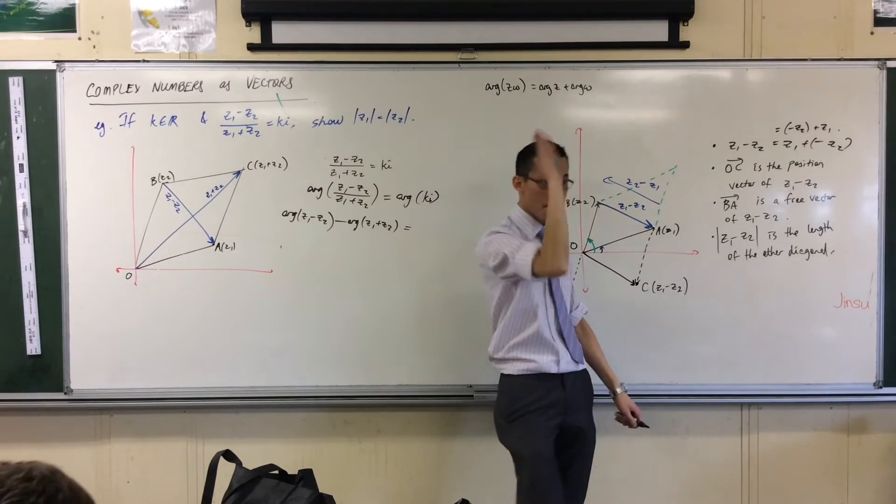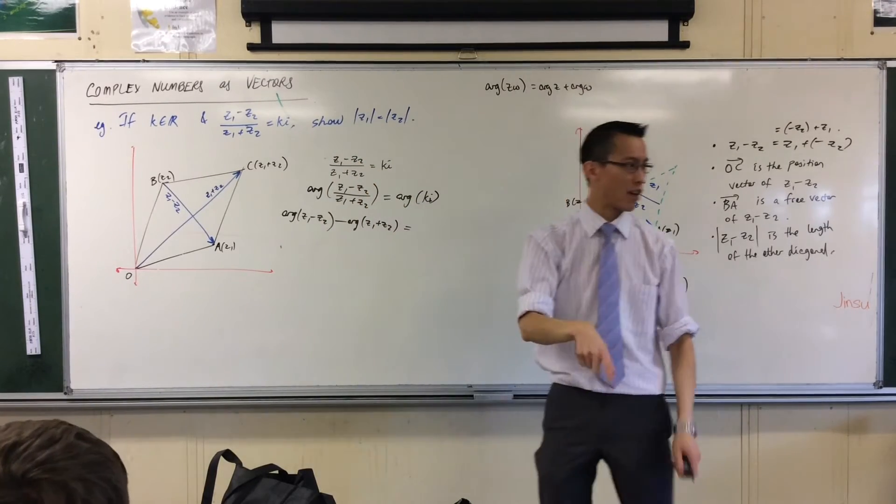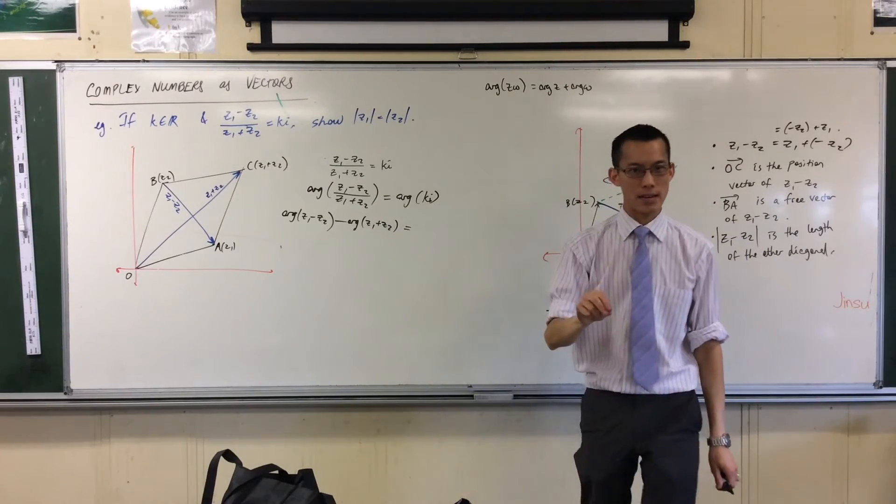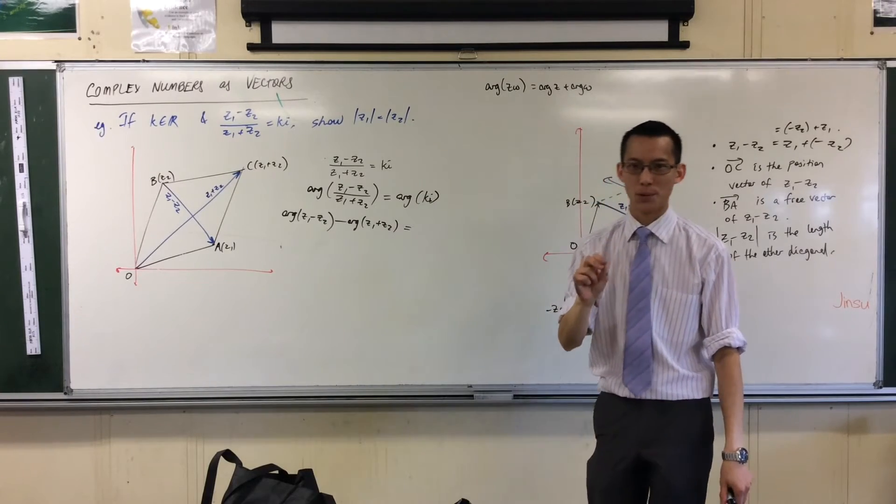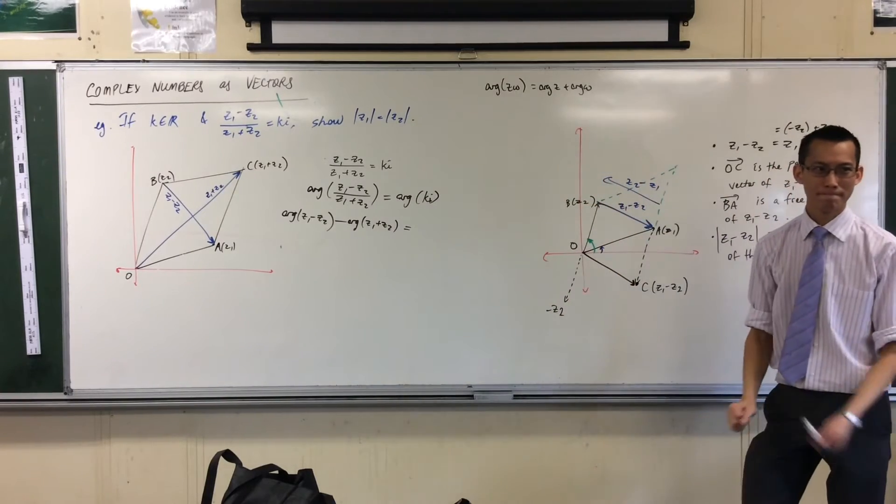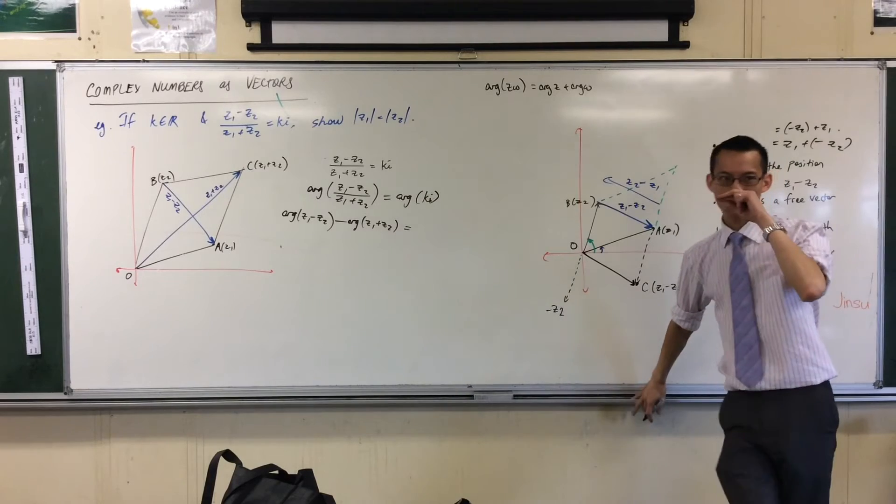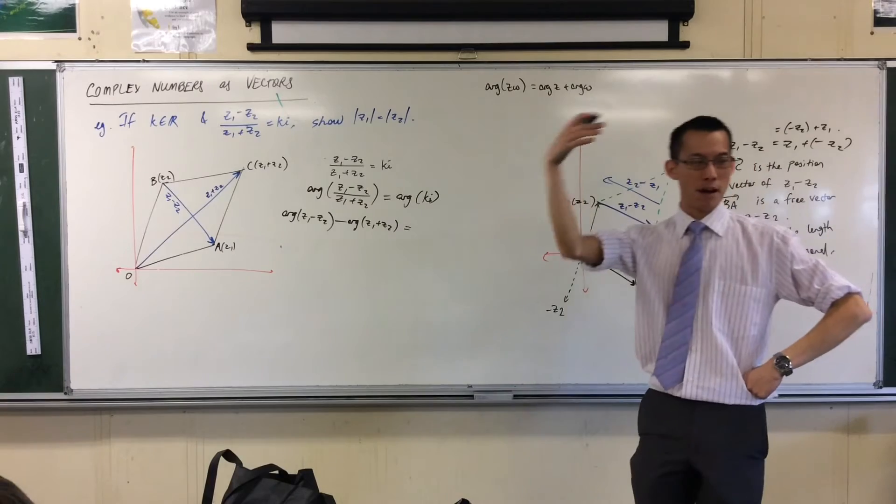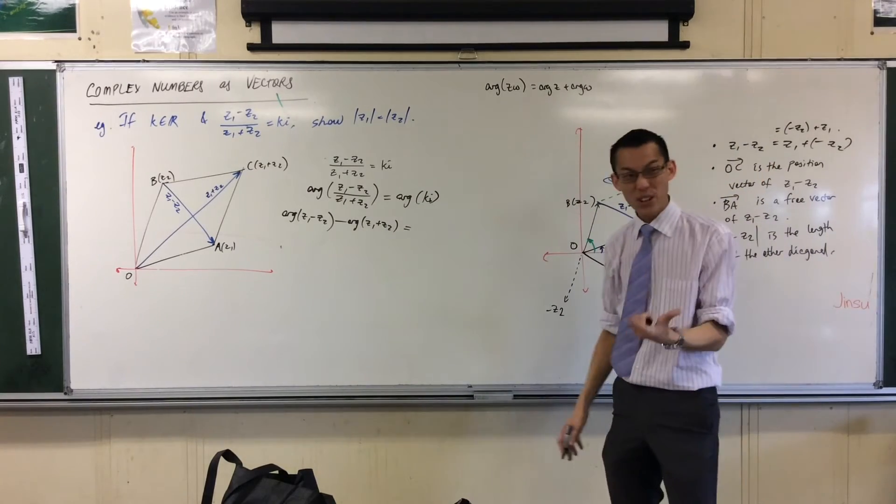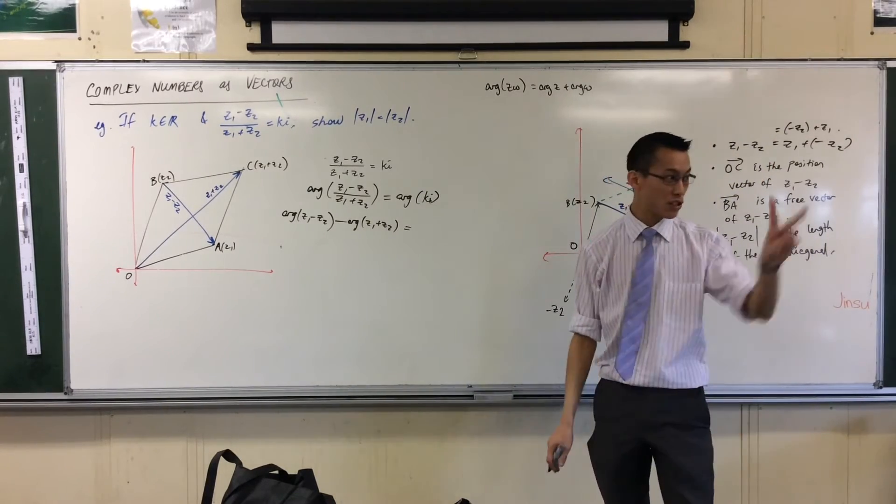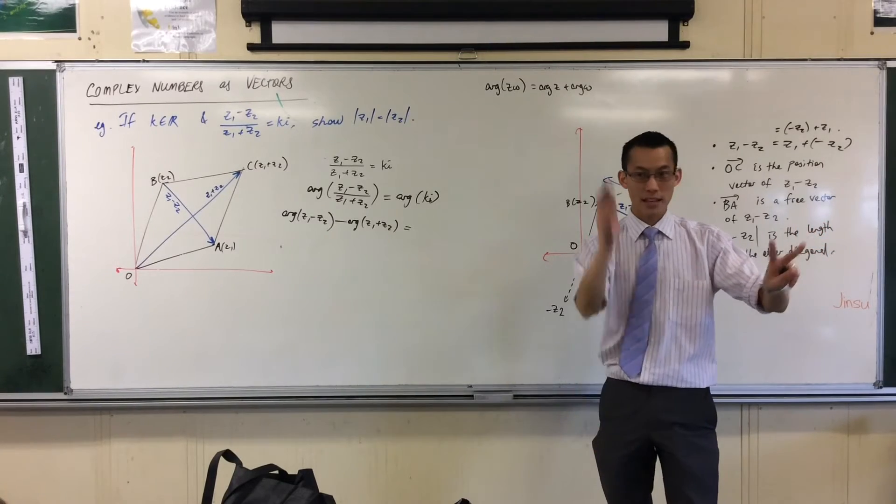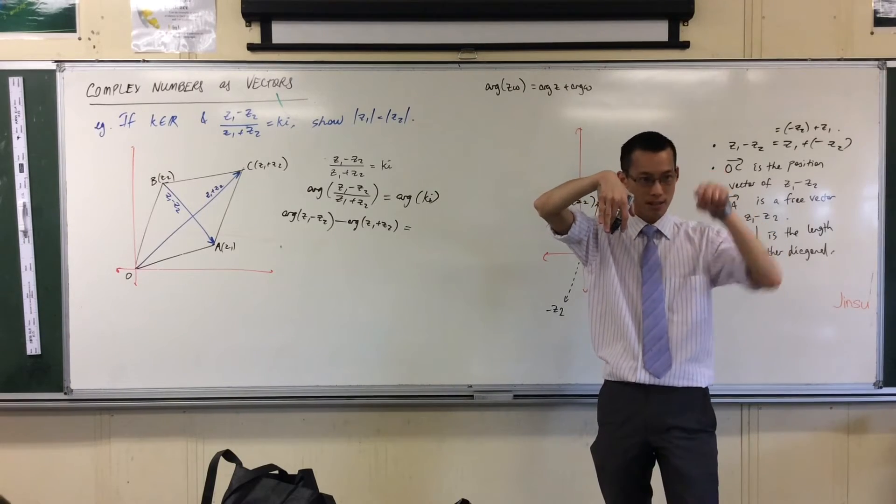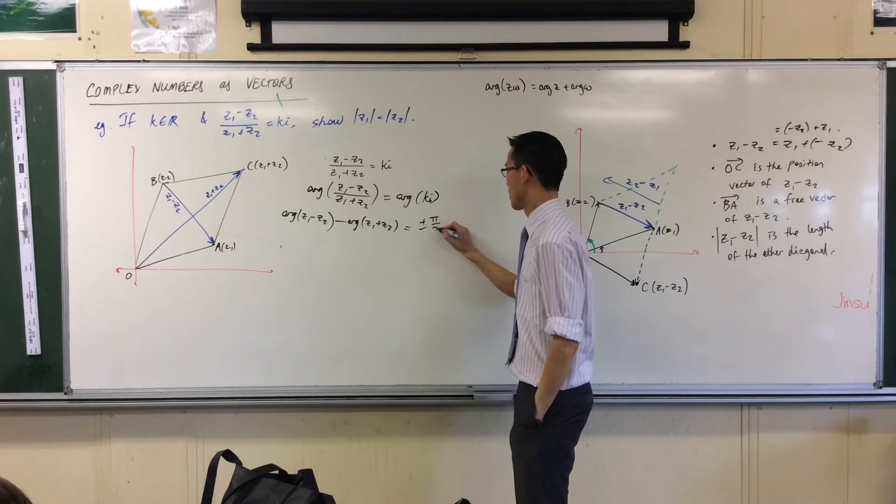So therefore I know its argument has to be some multiple of what? Pi on two. Now really you've only got two options. I could think about it as like pi on two, three pi on two, or I could just think about the principal argument. There's only two options. There's the top one which is pi on two, and then there's the bottom one which is negative pi on two.